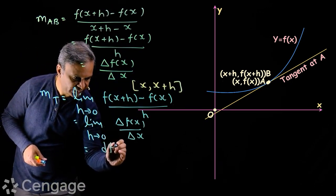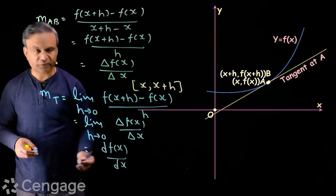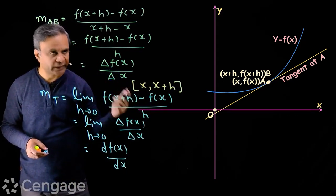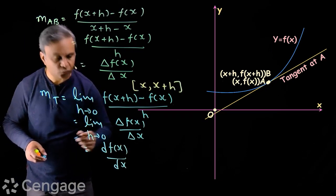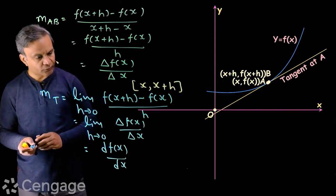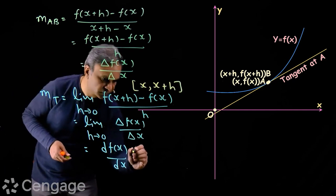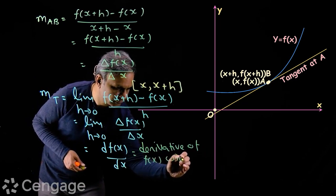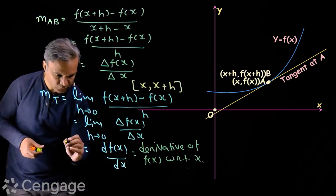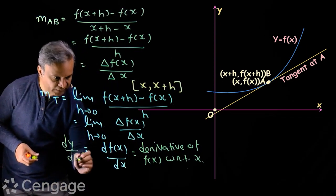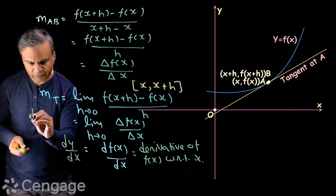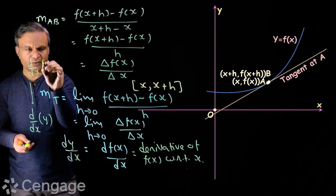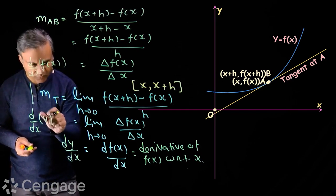So we have: slope of tangent = limit as h→0 of [f(x+h) − f(x)] / h, or equivalently limit as h→0 of delta f(x) over delta x. This is called df(x)/dx. Here dx means an infinitely small change in the value of the independent variable x, and df(x) is the infinitely small change in the value of the function. This ratio is called the derivative of f(x) with respect to x, also written as dy/dx or d/dx of f(x).